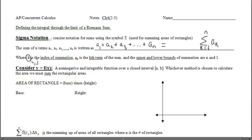If I start counting with k equals 1 and replace it in here for k, I get a-sub-1. Then k goes to 2, so I have a-sub-2. The sigma symbol means to put an addition sign between them. This expansion can be collapsed to this new notation, and that's going to help us define the integral as the limit of a Riemann sum.